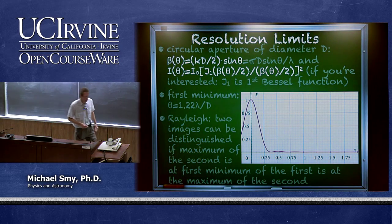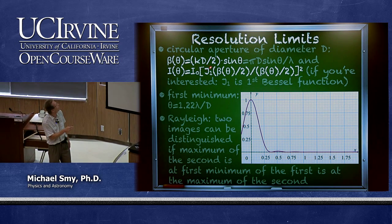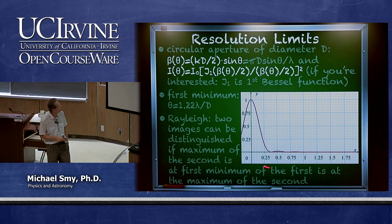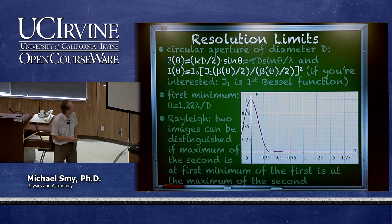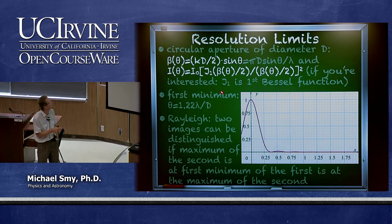In that case, the intensity is a function of x, where x is kd/2 times sine theta, and d is the diameter of the circular aperture. The central maximum is even brighter compared to the first neighboring maximum. The intensity function, in case you're interested, involves the first Bessel function.